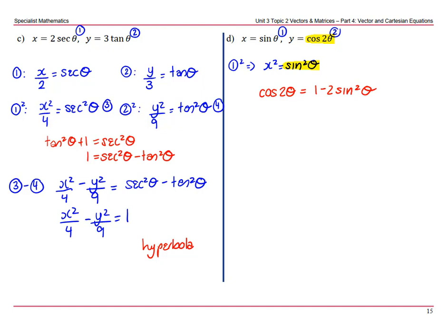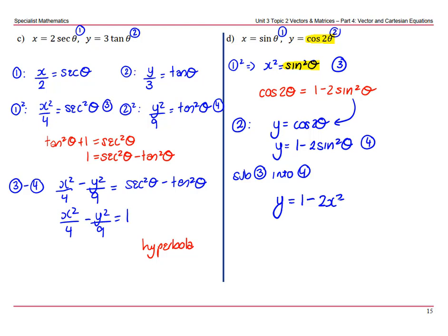So this is what we're going to have to use. So if we get our equation 2 and we write y equals cos 2 theta and replace it with the identity. So y equals 1 minus 2 sin squared theta. That's now equation 4. I'll come back and label this 3. So if we sub 3 into 4, we'll have y equals 1 minus 2x squared. And that is a parabola.